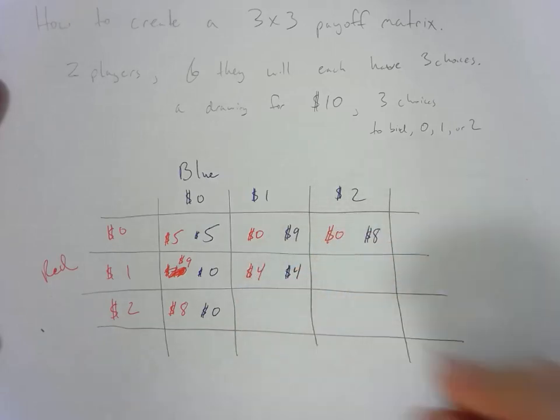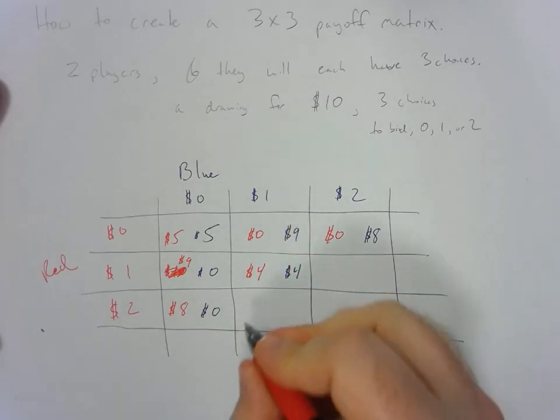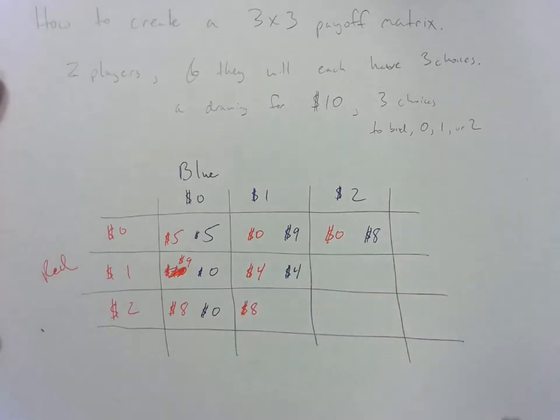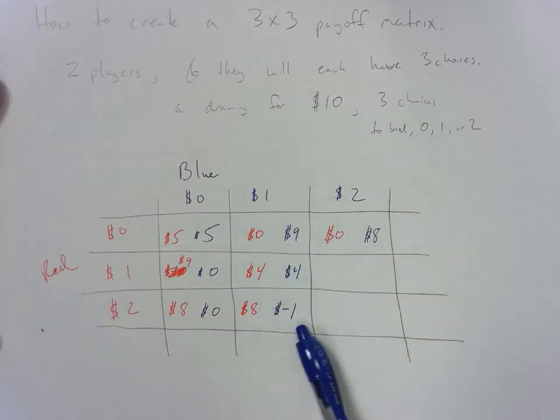Now what happens if red bids 2 and blue bids 1? Well red ends up winning so they end up with $8 and blue actually ends up with negative $1 because they bid 1 dollar but they lost. That's not good.